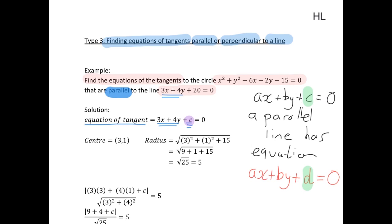So to do that we're going to have to use our perpendicular distance again to find the values of c that give a tangent where the perpendicular distance from our centre to our line will be equal to our radius.